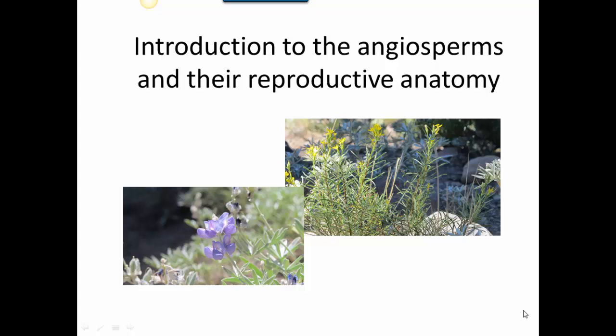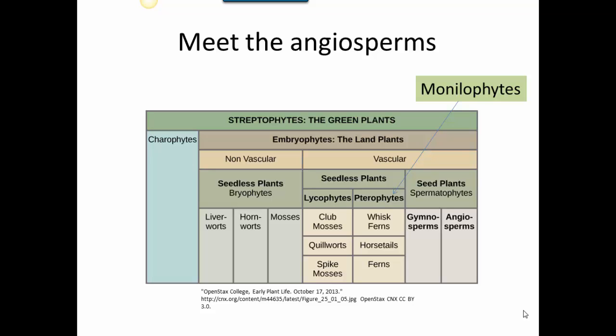The purpose of this lecture is to introduce you to the angiosperms, the flowering plants, and also to emphasize the anatomy of their flowers. Looking at a diagram examined when introducing bryophytes, lycophytes, manilophytes, and gymnosperms, you can see that the flowering plants, or angiosperms, are closely related to the gymnosperms. They are another group of seed plants, or spermatophytes.